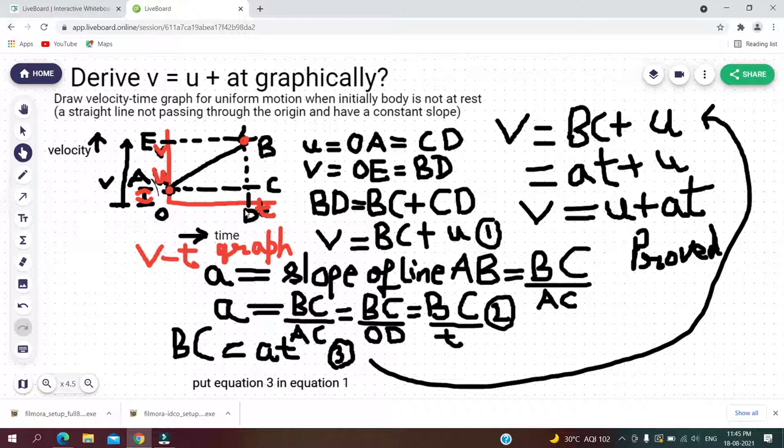D, they are parallel. So I can write that AC is equal to OD, and the magnitude of OD is equal to t. t can be 5 seconds, t can be 10 seconds, t can be any value.